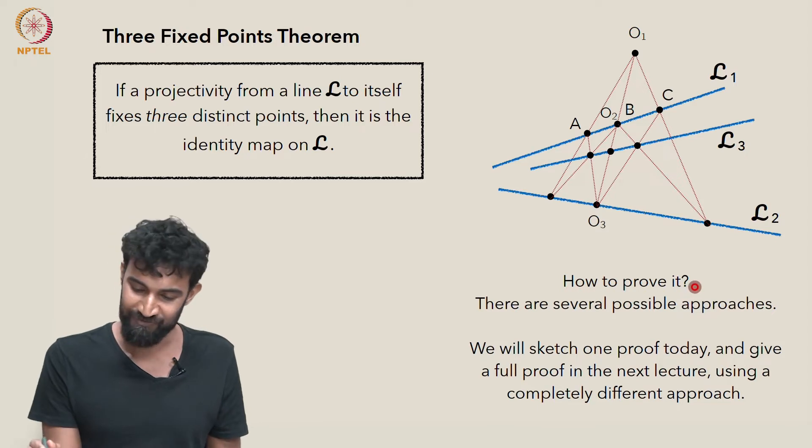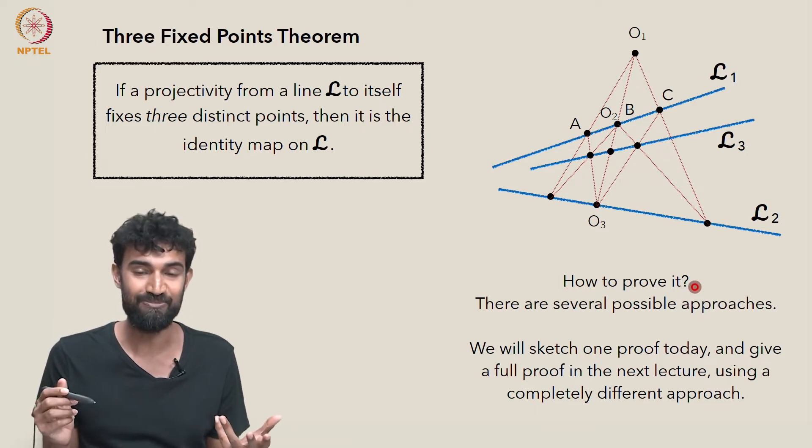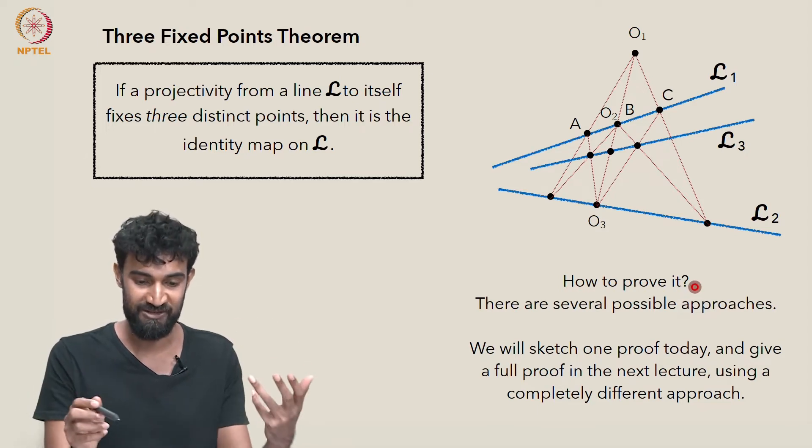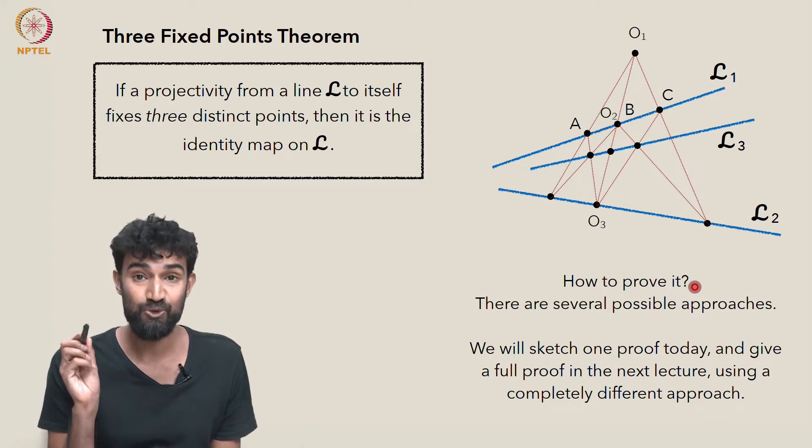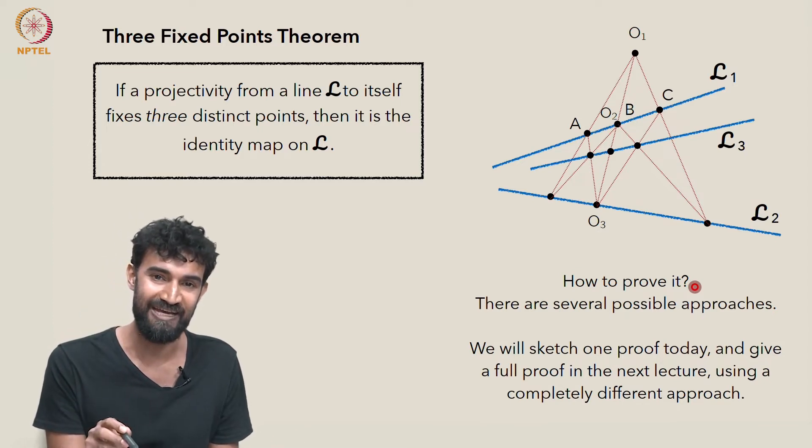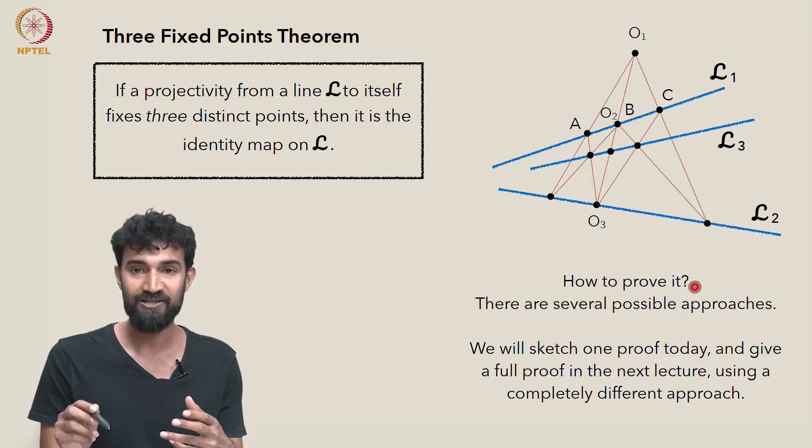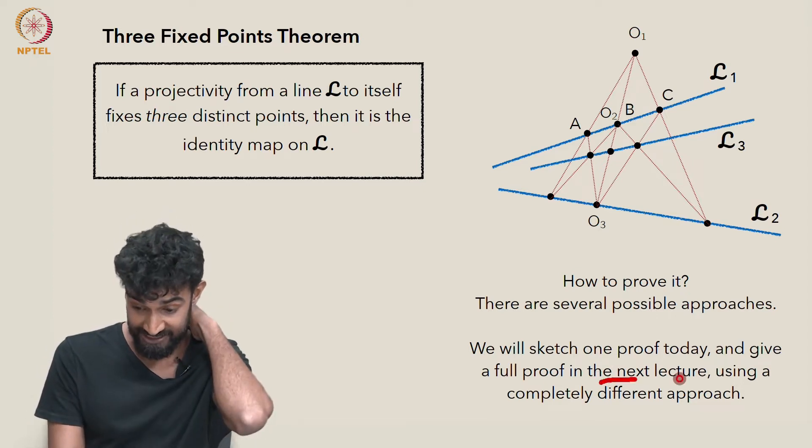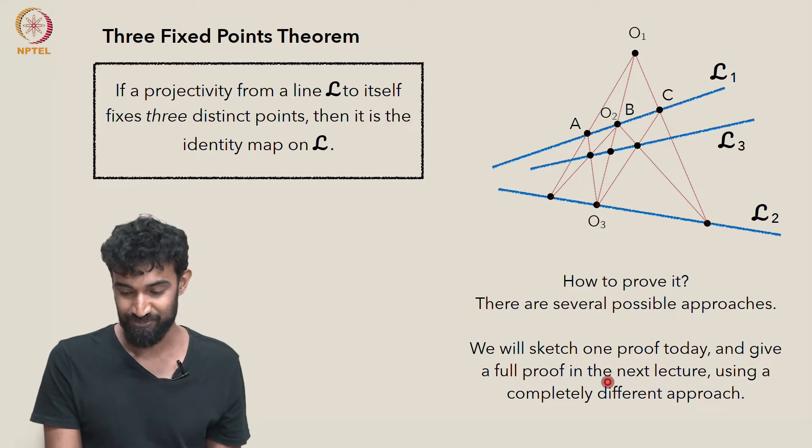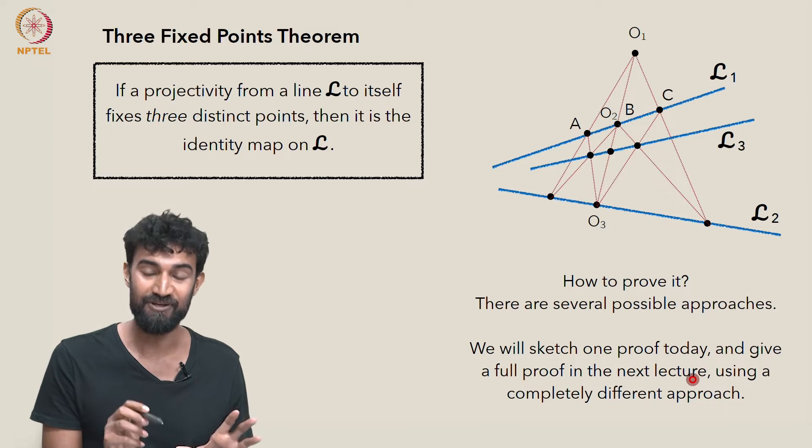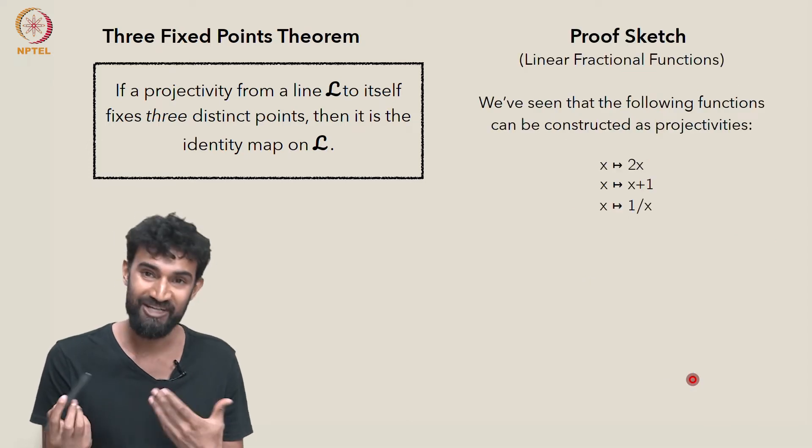So how do we prove this? Well, there's actually several possible approaches. There's many proofs of the Three Fixed Points Theorem. We're going to sketch one proof today, and we're going to do a different proof fully in the next chapter. But that'll use a completely different approach. So we'll actually get two proofs of this.